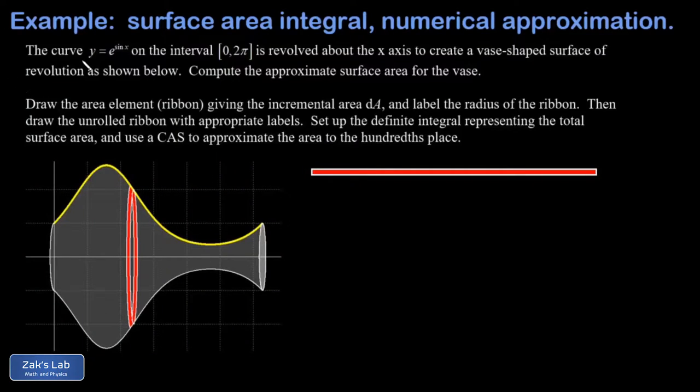In this video we're given the curve y = e^(sin x), shown as the yellow curve below. It's on the interval [0, 2π] and has been revolved around the x-axis to trace out a surface of revolution. We're asked to find the surface area using the ribbon method.